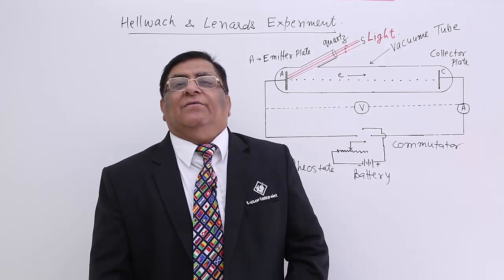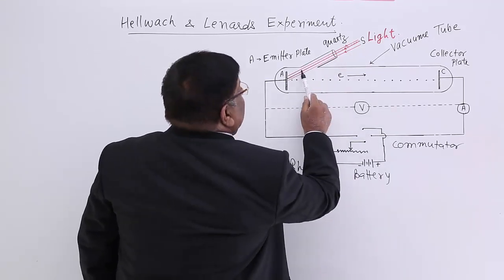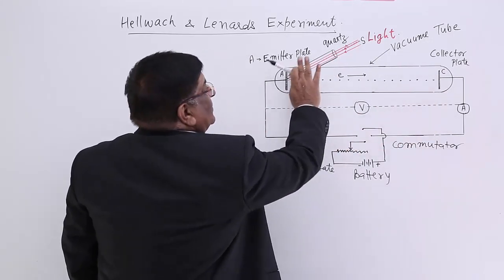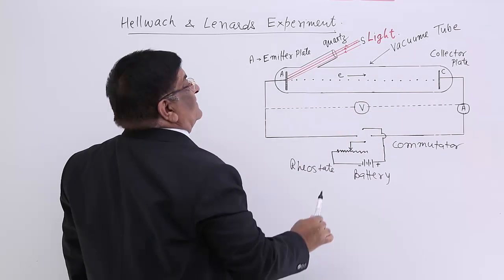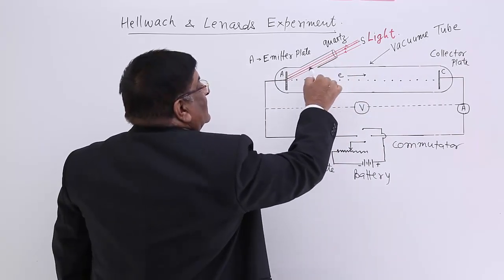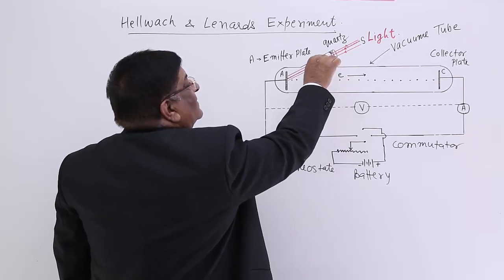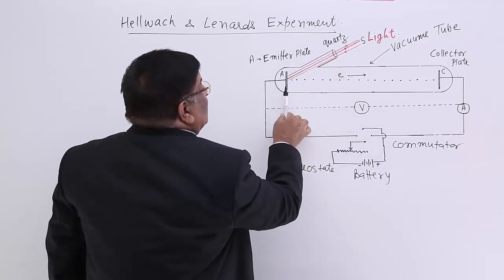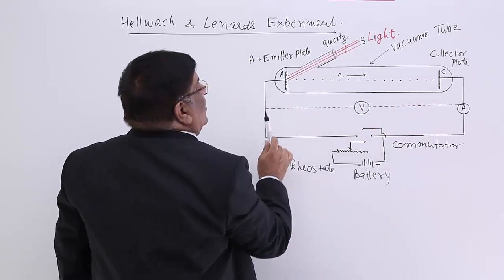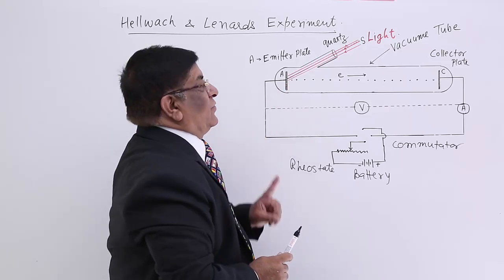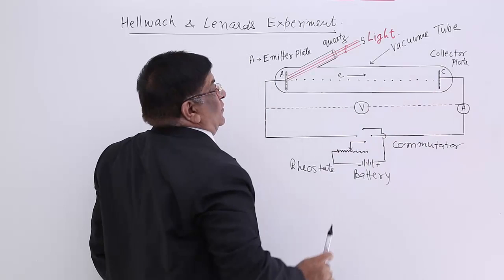What was their experiment? The experiment was: they have taken a glass tube which was closed and evacuated. There was an opening where a quartz glass was fitted. It has two metal electrodes — one we call the emitter plate because this is going to emit electrons, and one is the collector plate because this will collect electrons.